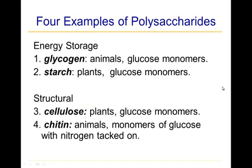This slide shows the four examples of polysaccharides we're going to focus on, presented according to their functionality. The energy storage polysaccharides are glycogen, which stores energy in animals and is made of glucose monomers, and starch, which stores energy in plants and is also made of glucose monomers.